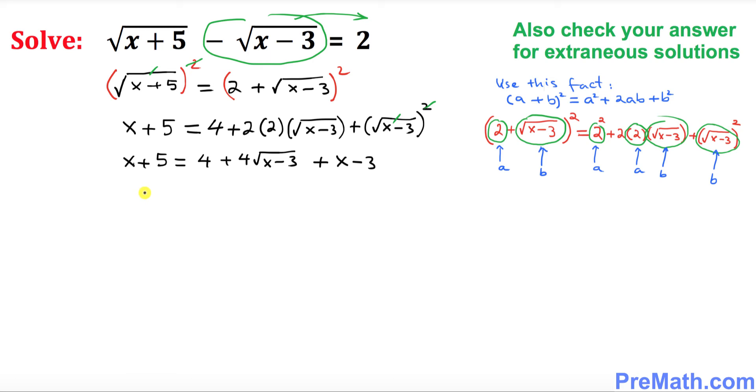So that is simply going to give us let's simplify on the right hand side. So you can see 4 minus 3 these are like terms that's going to give you 1 plus now leave everything as it is 4 square root of x minus 3 and then plus x. So far so good.